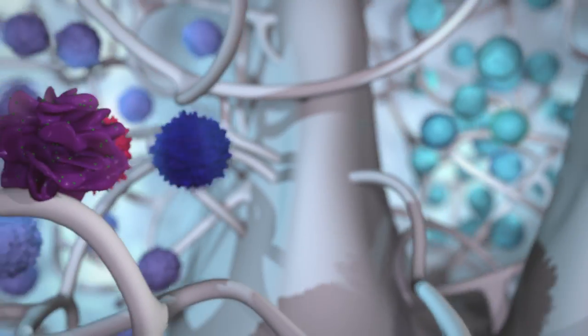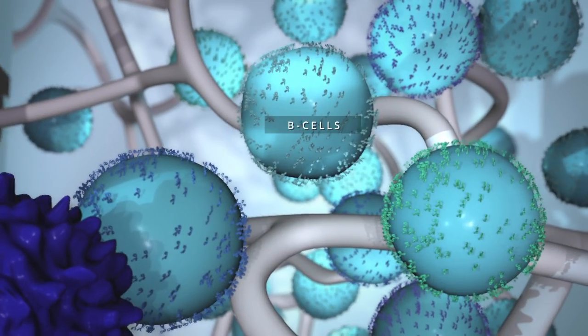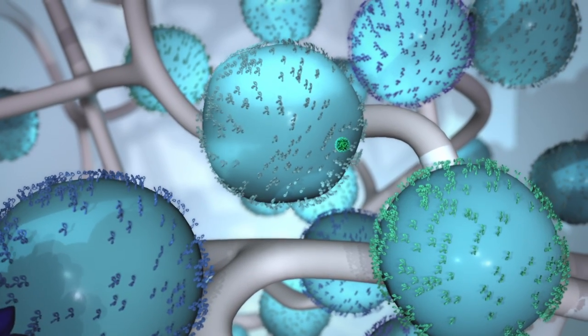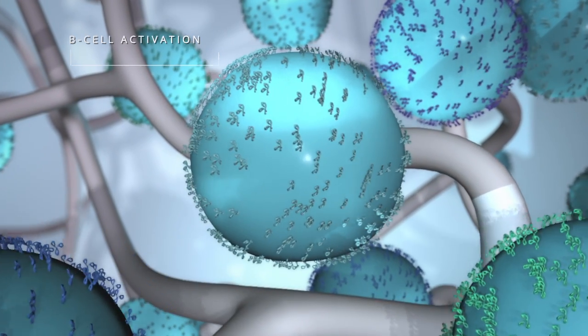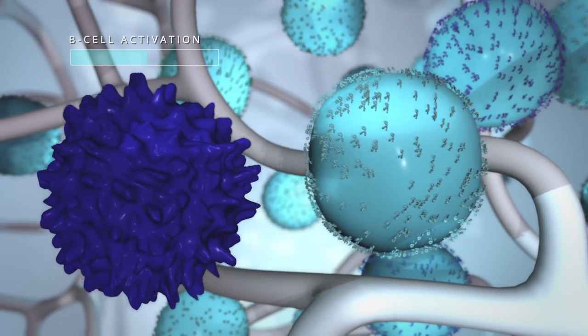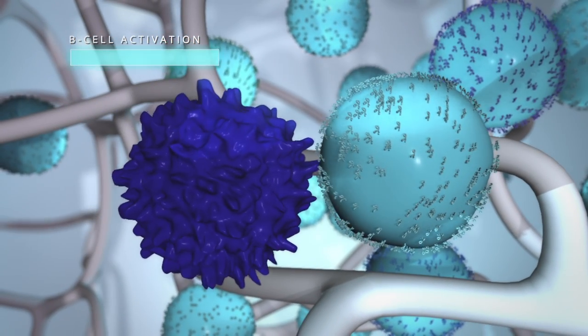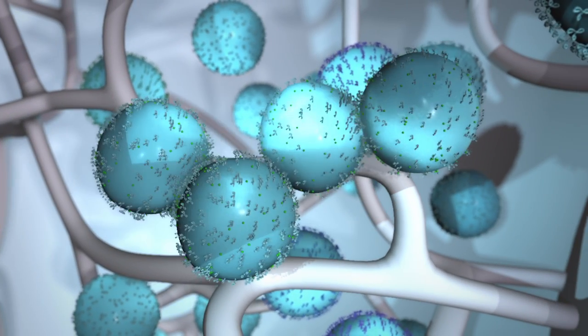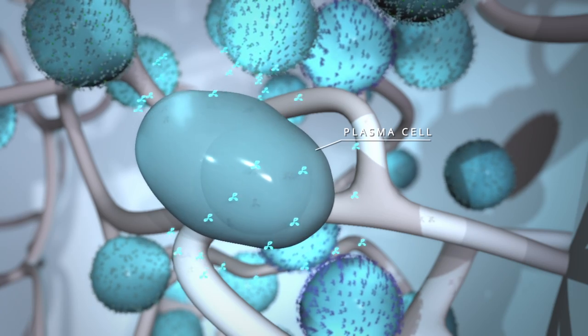The helper T cell then migrates over to the B cell region. Here, an intact virus is first captured by a B cell bearing an antibody specific for that virus. The helper T cell, which had been exposed to the same virus, finds the correct B cell and completes its activation. The B cell divides and differentiates into plasma cells, which begin producing antibodies.